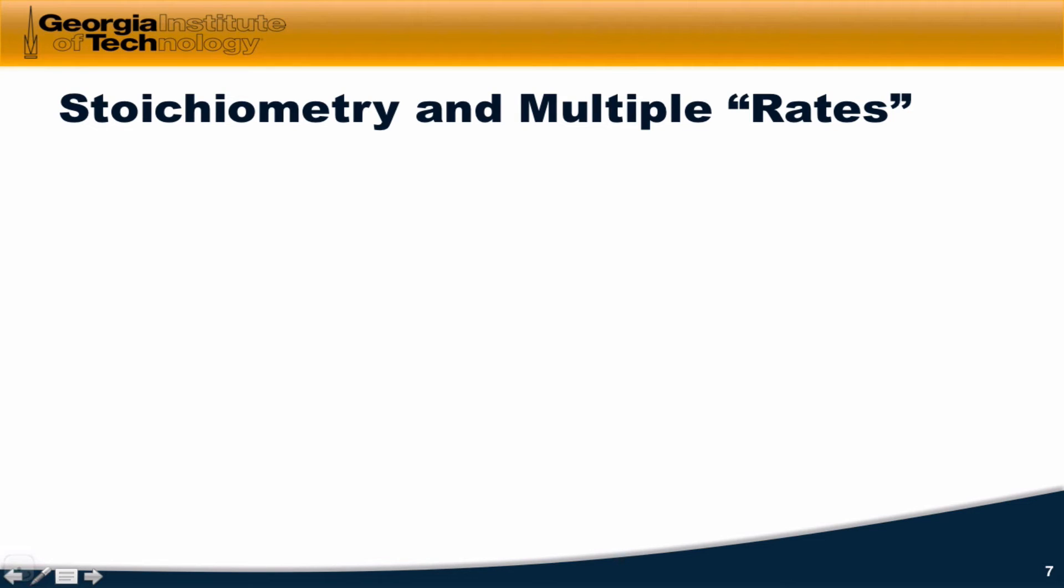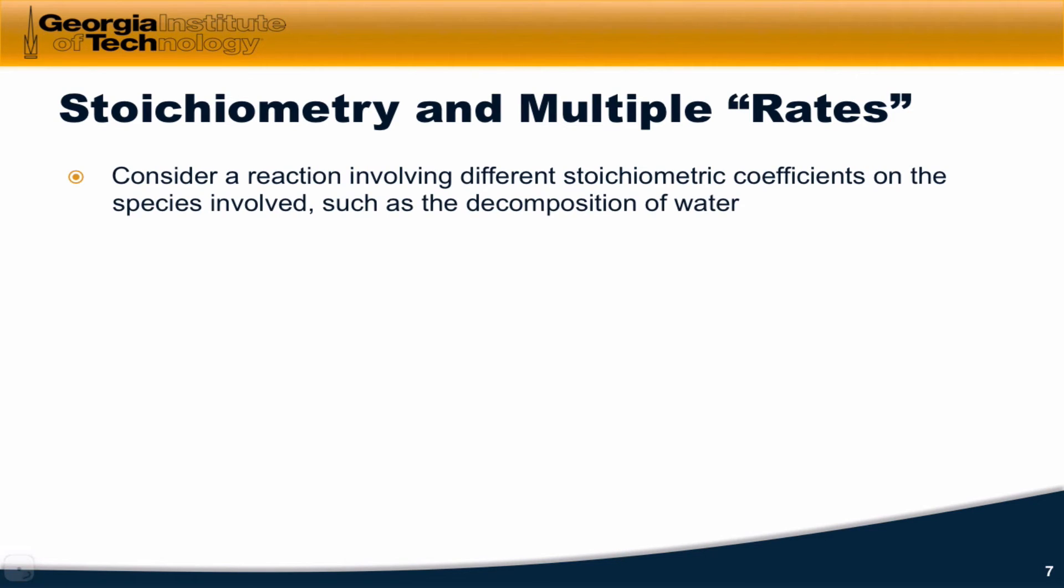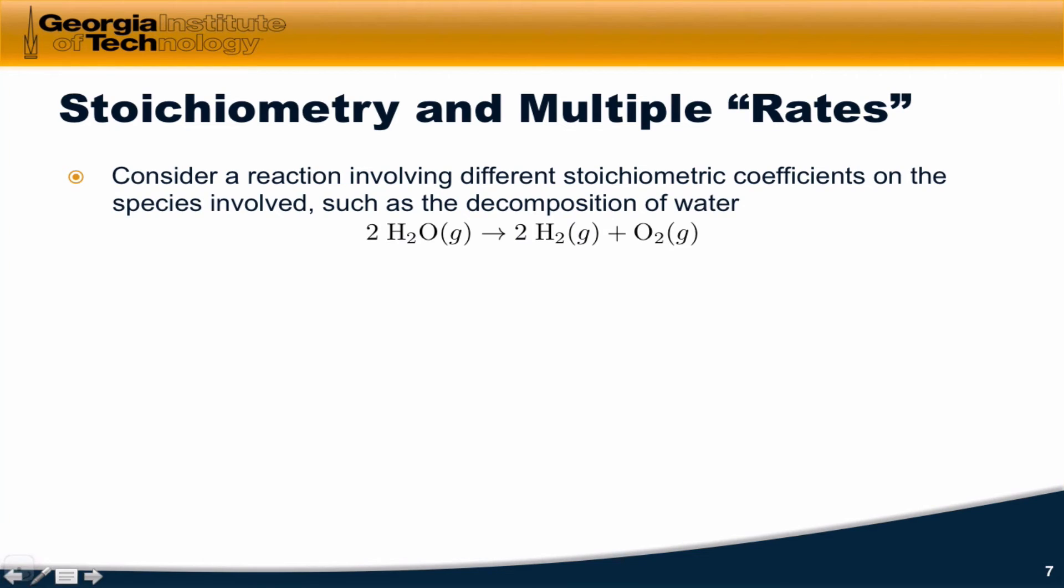So the way we've defined rate so far is as the change in concentration of a reactant or product with respect to time. But let's think about a reaction involving different stoichiometric coefficients on the species involved to expose a little problem with this approach, a little complication. In the decomposition of water, two moles of H2O decompose to form two moles of H2 and one mole of O2.